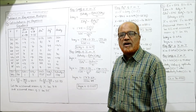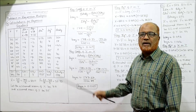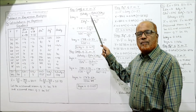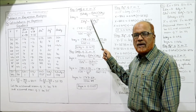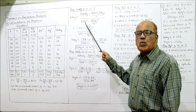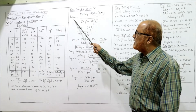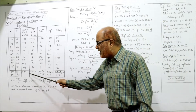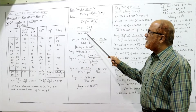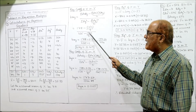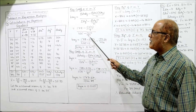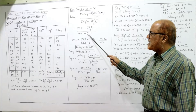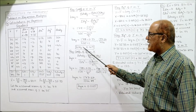We got all the totals; now find regression coefficients bxy and byx. The regression coefficient bxy, when deviations are taken from assumed mean, formula is: bxy = [Σdx·dy − (Σdx × Σdy)/n] ÷ [Σdy² − (Σdy)²/n]. Substituting: Σdx·dy = 178, Σdx = 1, Σdy = 3, n = 9, Σdy² = 425. So 178 − (1×3)/9 = 178 − 0.33, and 425 − (3²)/9 = 425 − 1. This gives bxy = 0.419.